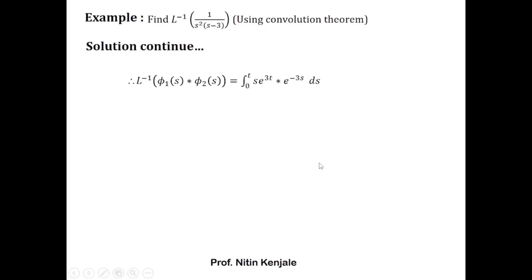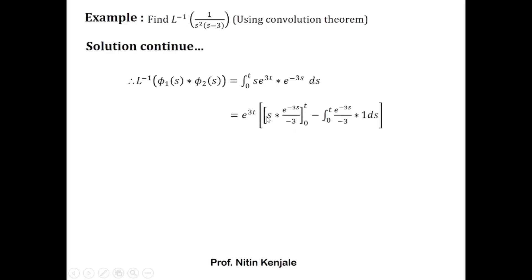Using integration by parts, we evaluate the integral. Outside we have e^(3t), and by the integration by parts rule inside we have: s · (e^(−3s)/(−3)) minus the integral of (e^(−3s)/(−3)) · 1 ds. Substituting the limits: when s = t we get t·e^(−3t)/(−3), and when s = 0 we get 0, since 0 times anything is 0.